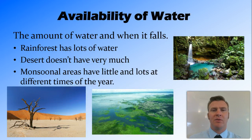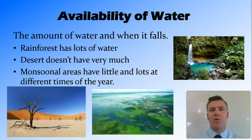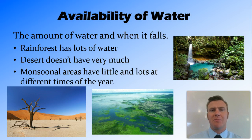Availability of water refers to how much water there is and when or how often it falls. For example, rainforests have a lot of water — it rains a lot — while deserts don't have very much. Then you have some that are in between, like monsoonal areas, where they have very little water for most of the year, and then a rainy season where a lot of water comes in and many areas flood.